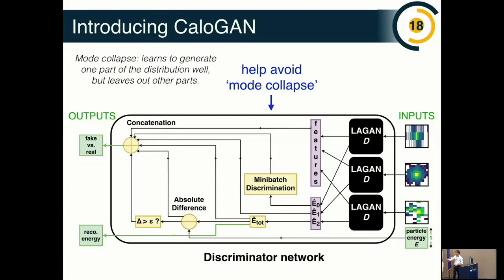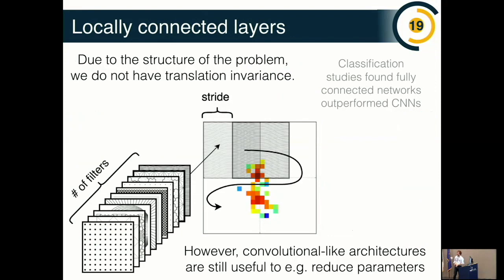Another piece is called mini-batch discrimination. The idea is that if you look at single images it's very hard to tell if it's real or fake, but if you look at a small ensemble of images it can be easier — you can start estimating some statistical properties of your generated images. Mini-batch discrimination takes a mini-batch and computes features from it, which are then fed into a fully connected network to compute the real versus fake classifier. This discriminator network is then combined with the generator and they fight it out until the discriminator is totally confused.